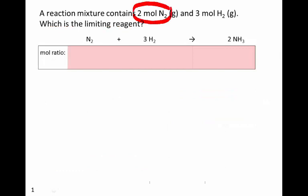So we're going to see if all of this nitrogen is used up how much ammonia would it produce, and how does that compare to the amount of ammonia that would be produced if rather all of this 3 moles of hydrogen were used up, and whichever one produces less ammonia that is the limiting reagent.